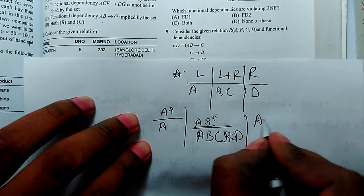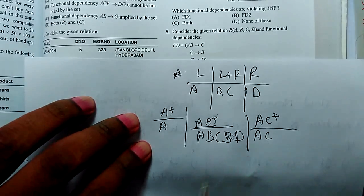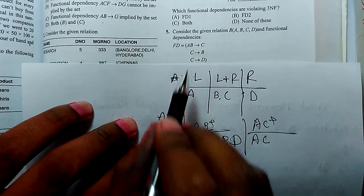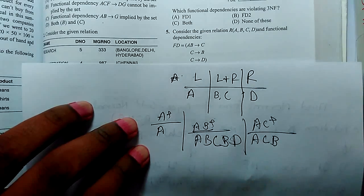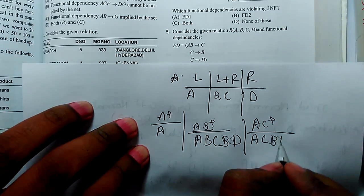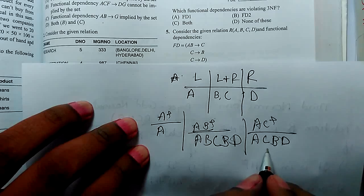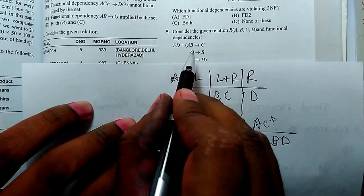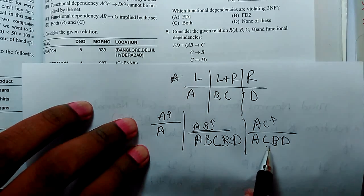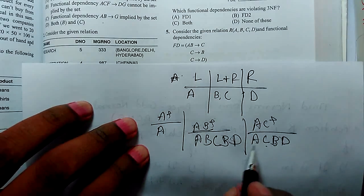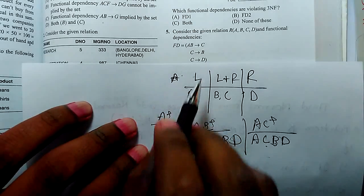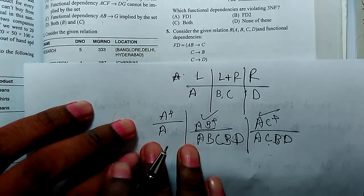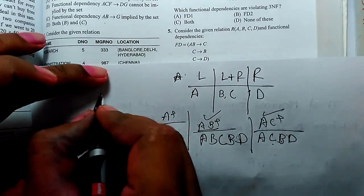Now we are going to check AC. AC determines C. AC determines A, B, and C determines D. Now AB can determine C. So AC can also determine AB and C. So AB and AC both are keys.